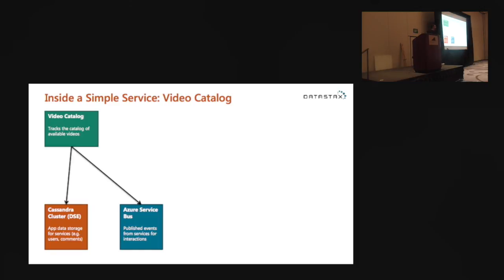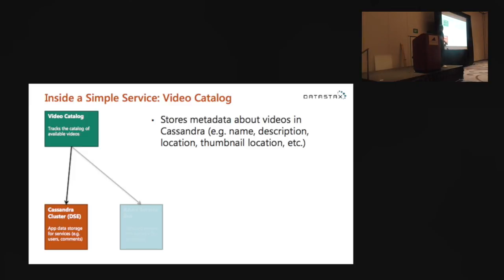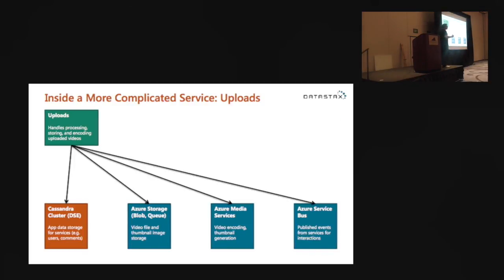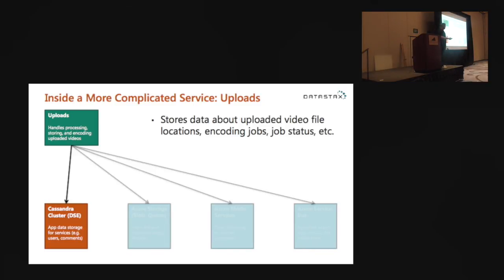Looking inside the services: the video catalog tracks what's available to be played back, storing data about videos in Cassandra — name, description, thumbnail location, video file location — and publishes events about interesting things that happened, like 'a new video was added.' Then we have more complicated services like the upload service — probably the most complicated in the system. It handles re-encoding of uploaded user videos, stores data about uploaded videos in Cassandra, uses Azure Storage for raw files, Azure Media Services for re-encoding and thumbnail extraction, and uses Azure Service Bus to publish events — like 'that uploaded video is now published and ready to be played back.'